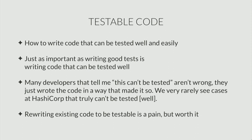It's very common — from junior to senior engineers — to hear people say 'this just can't be tested well, so I didn't write a test.' They might not be wrong. But by refactoring or re-architecting in a certain way, you could usually get to a point where at least 90% of that functionality is tested. At HashiCorp, we've never seen anything that can't be tested very well. The slides are ordered roughly from things everyone knows to getting more esoteric, so don't be discouraged at the beginning.